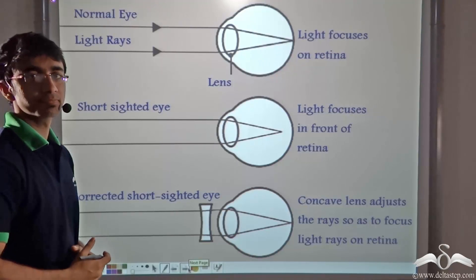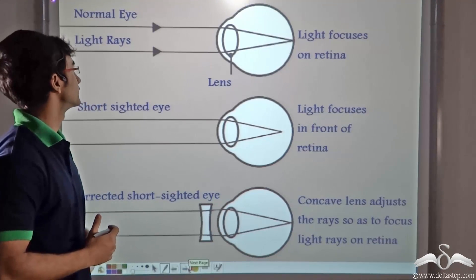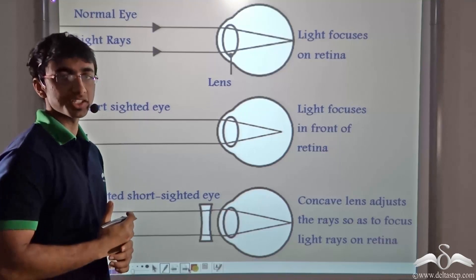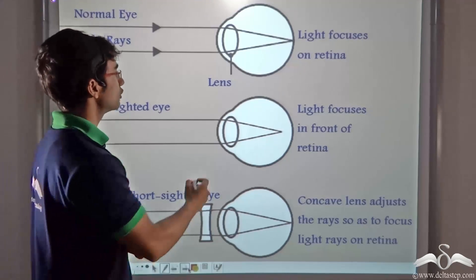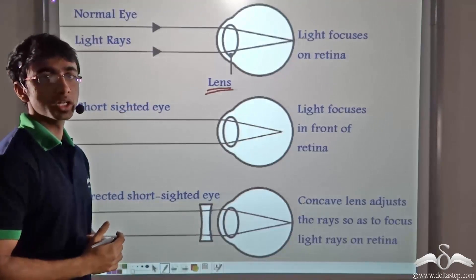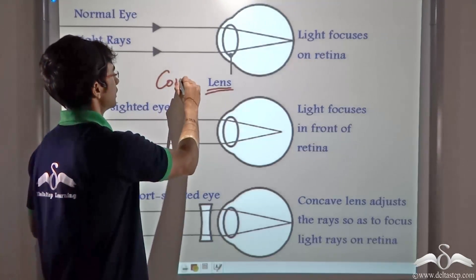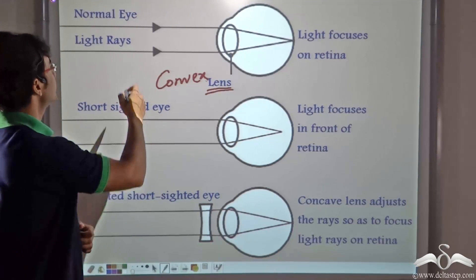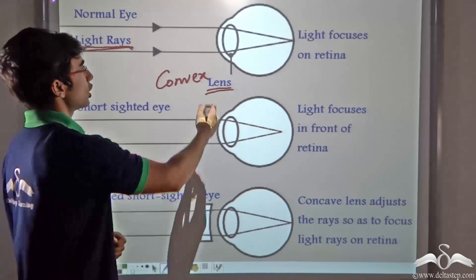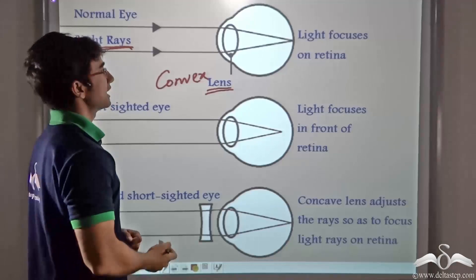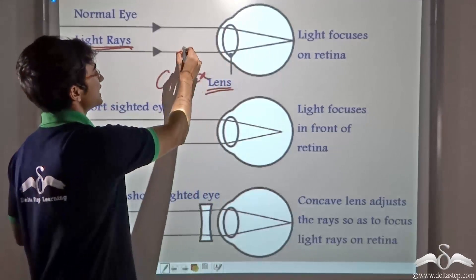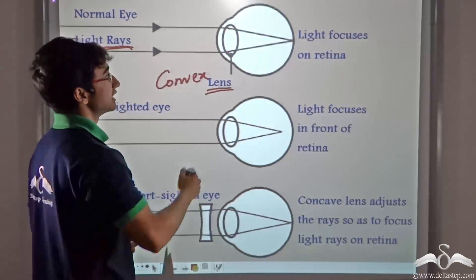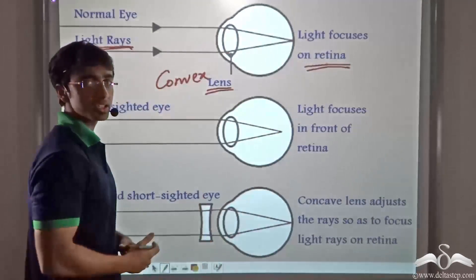Now look at the picture being shown on the board. This is a very interesting scenario. A human eye is shown, and if you recall from our previous lecture, the human eye is also an example of a lens — specifically, a convex lens. So when light rays from a far-off object fall on the eye, since they are parallel and the eye is a convex lens, these rays converge to a point — the focus of this lens — which lies on the retina.